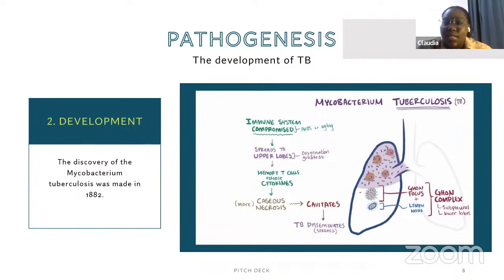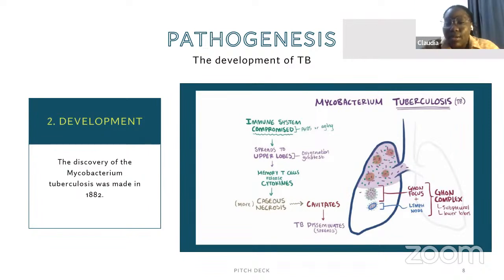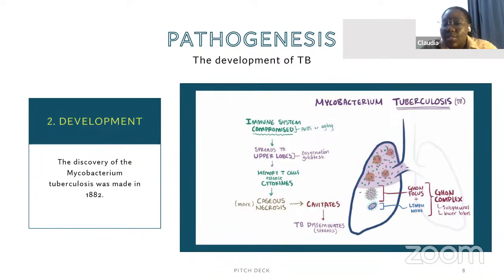This is the development of the bacteria inside your body. It usually starts off when you have a compromised immune system — people with AIDS or elderly people with compromised immune systems are more vulnerable. It then spreads to the upper lobes of the lungs where symptoms develop. Memory T-cells release cytokines as an immune response, causing inflammation, and leading to caseous necrosis — where cells in your lungs begin to die, causing cavities and potentially spreading the bacteria further.